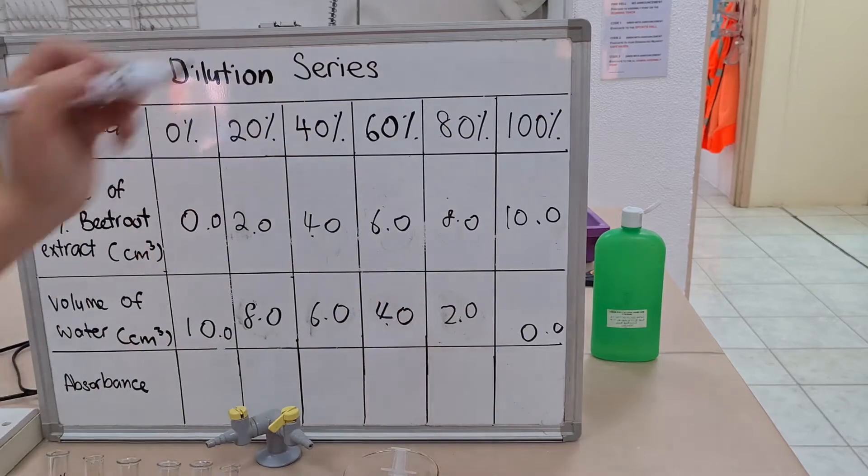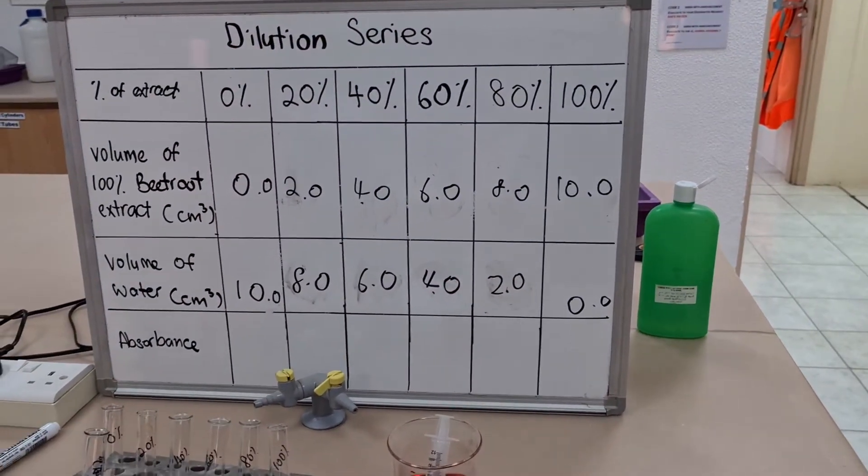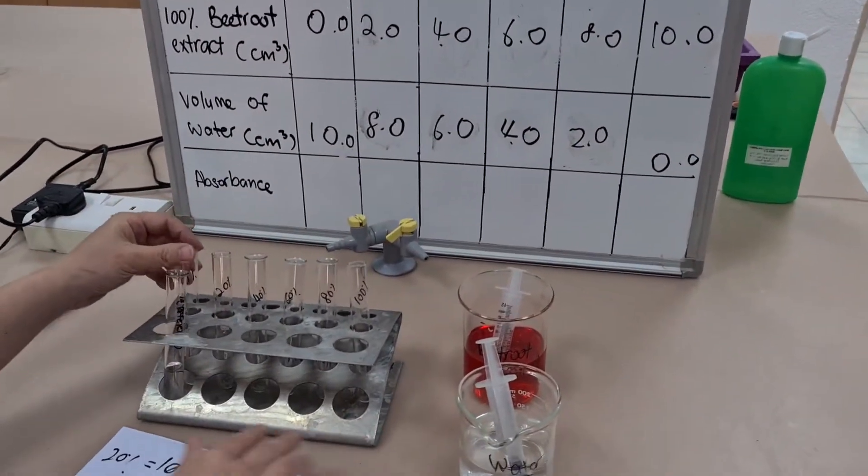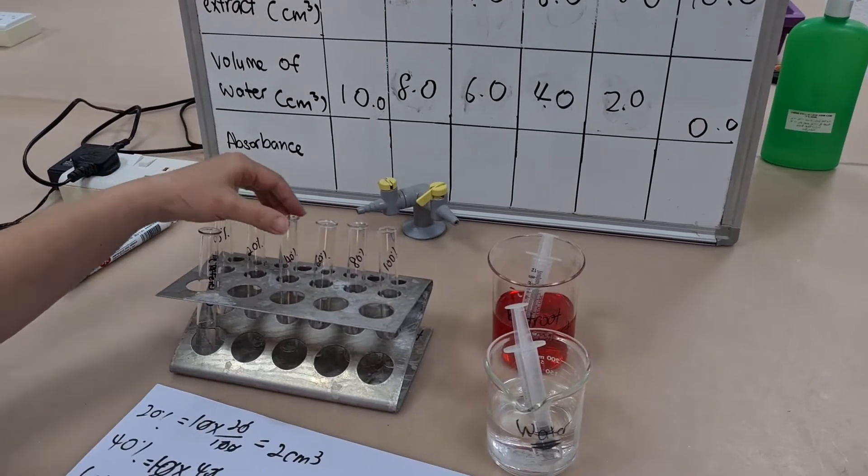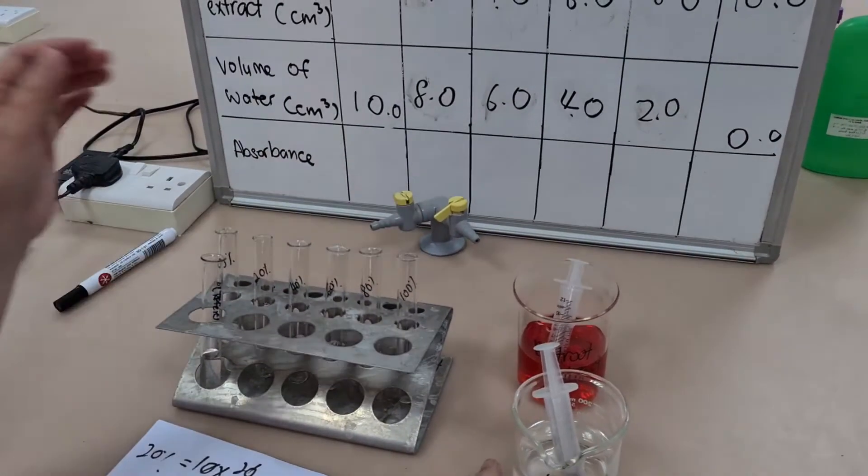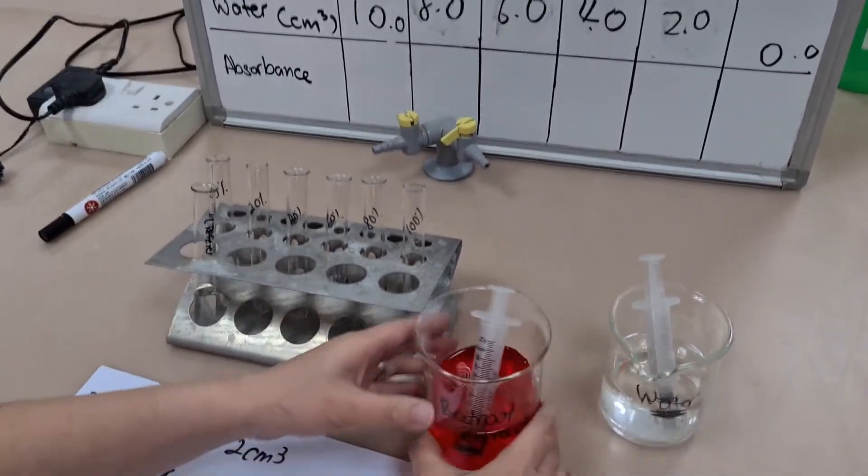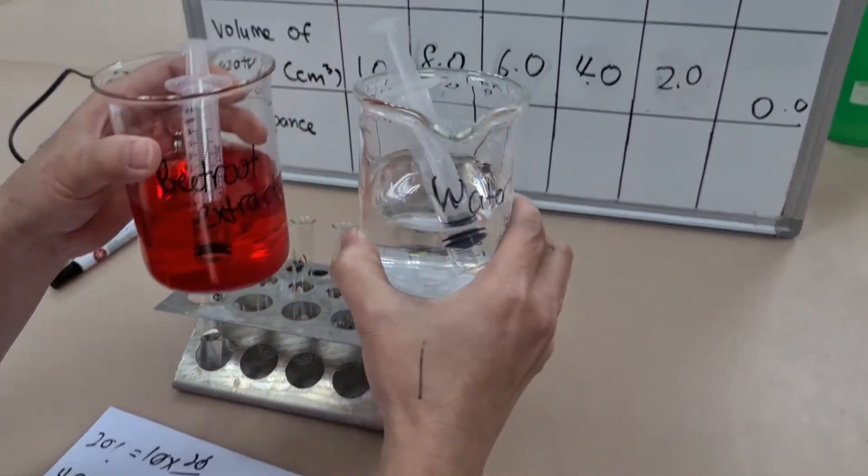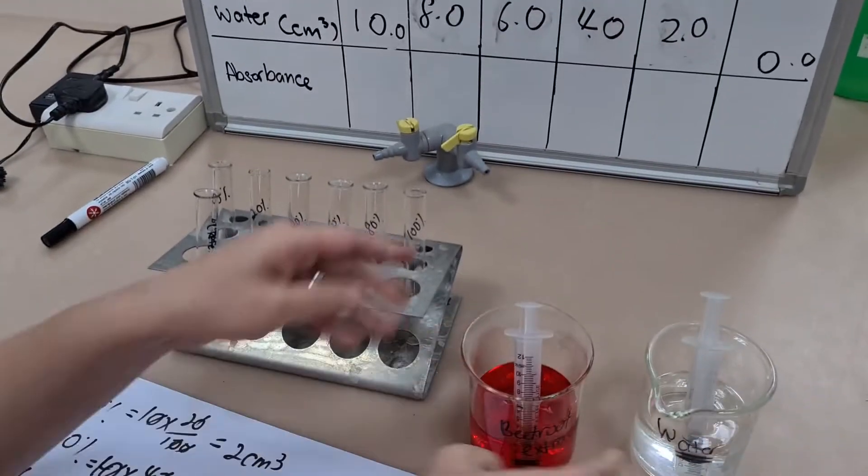So in this instance, we're using beetroot extract. We've taken a beetroot and we've used ethanol to extract the pigment from it, and we've been left with a concentrated stock solution. So let's go ahead and see how this is done.